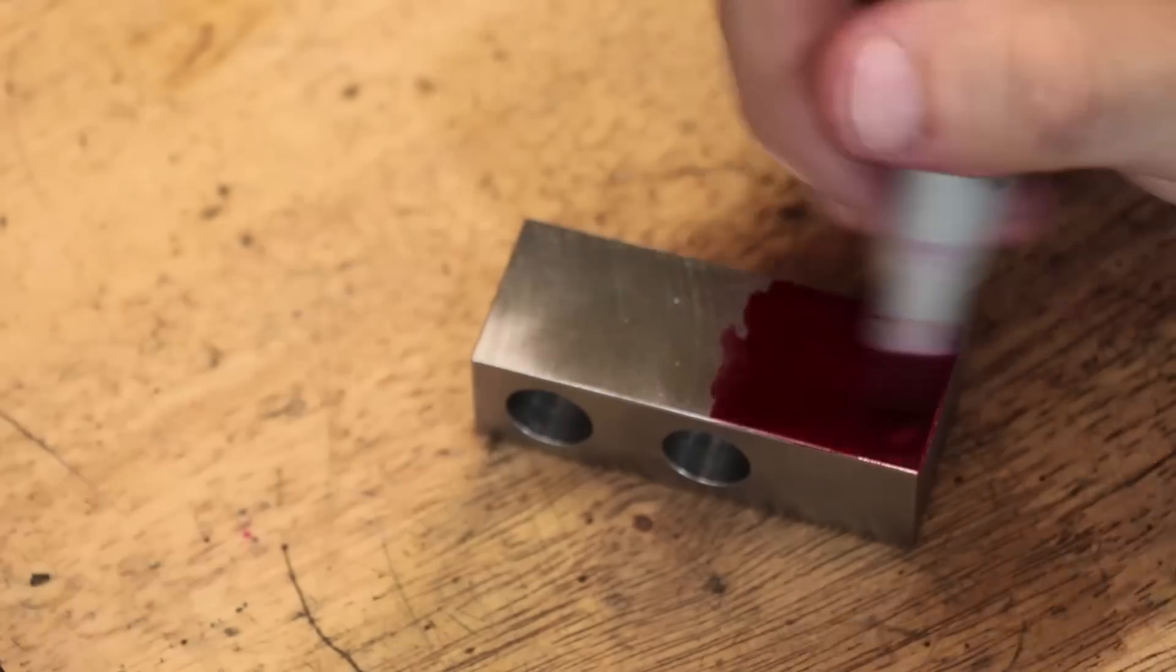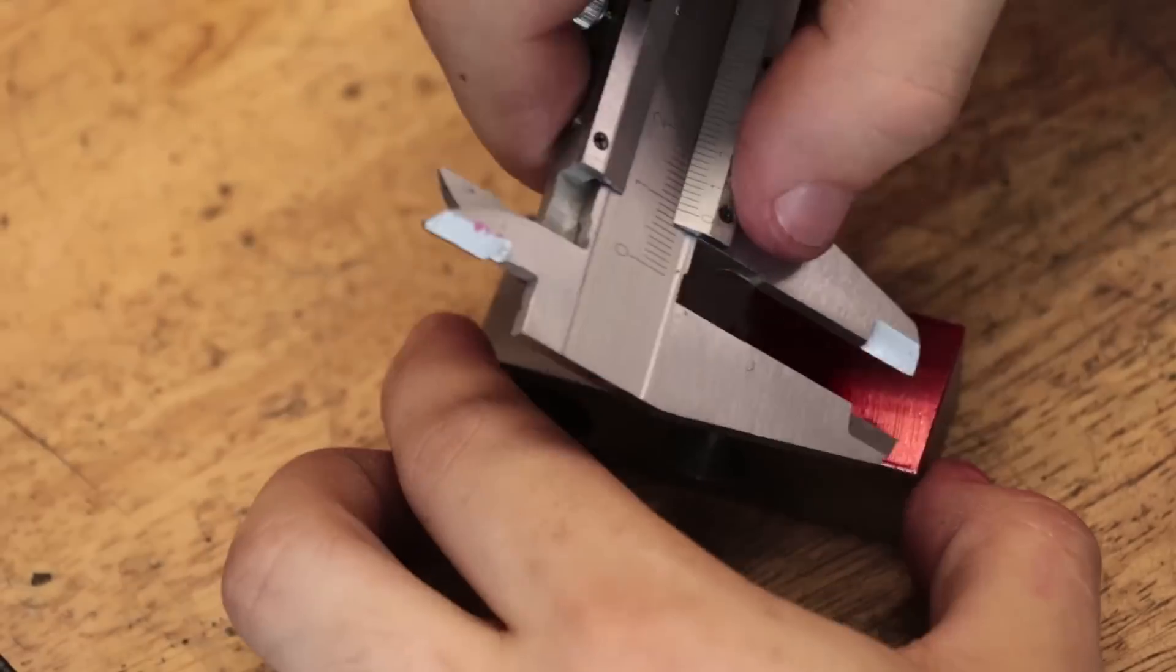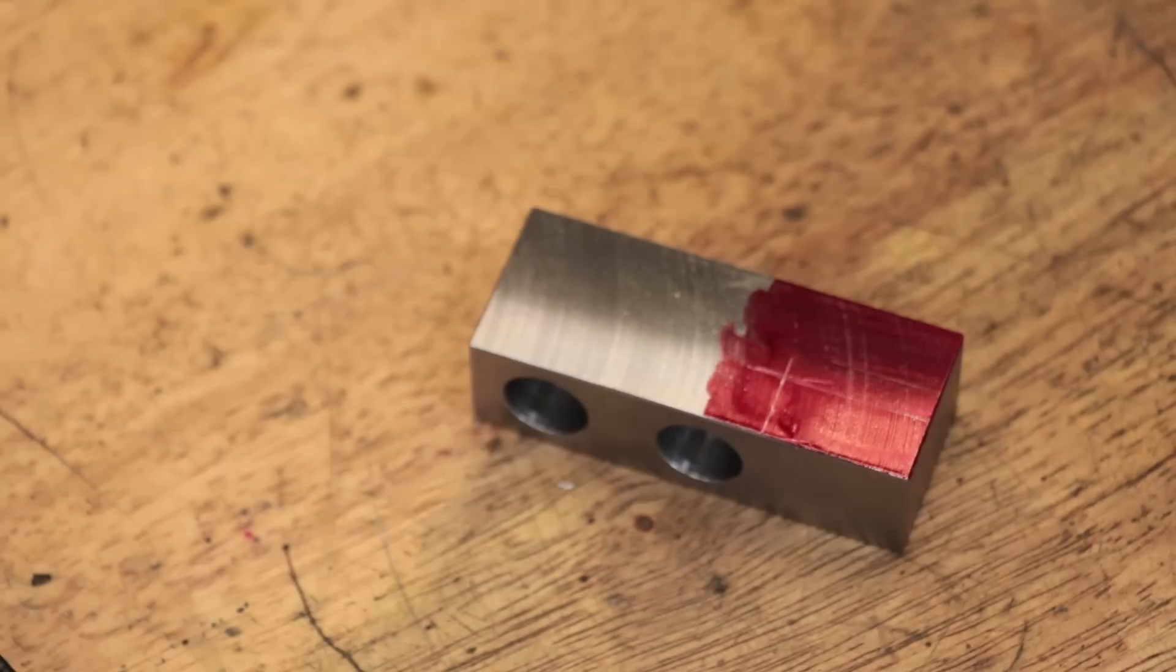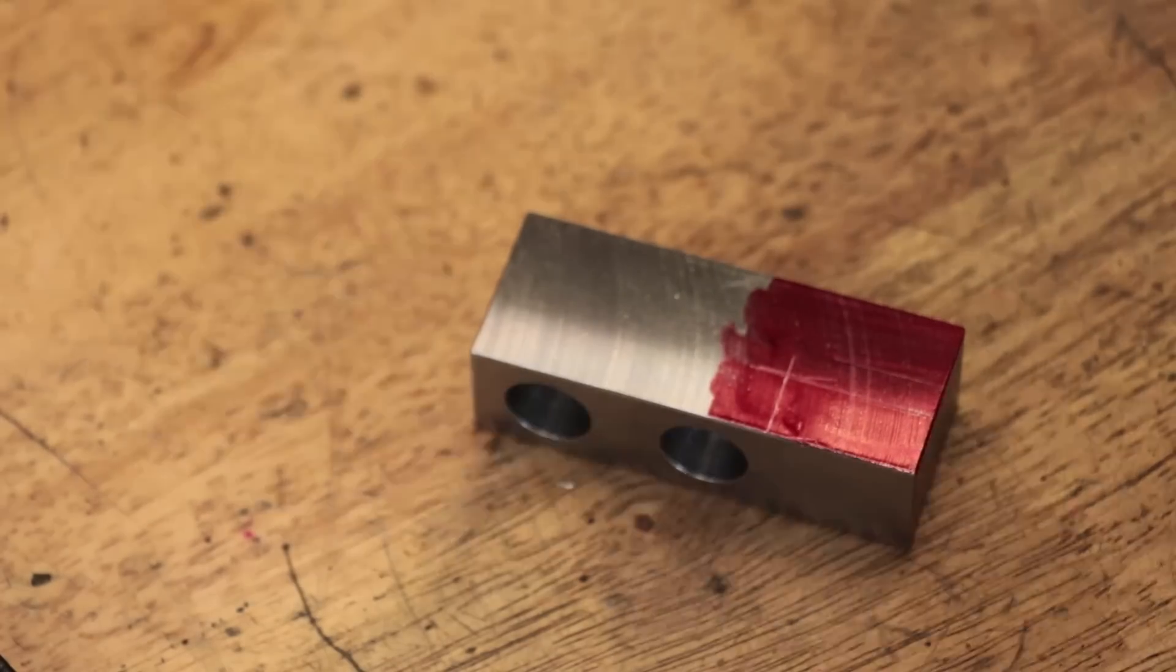With that done, I can now mark out the profile that needs to be cut to allow it to clamp onto the ways. For the most part, I will be using the DRO, but having layout lines really does help visualize exactly what I'm doing.